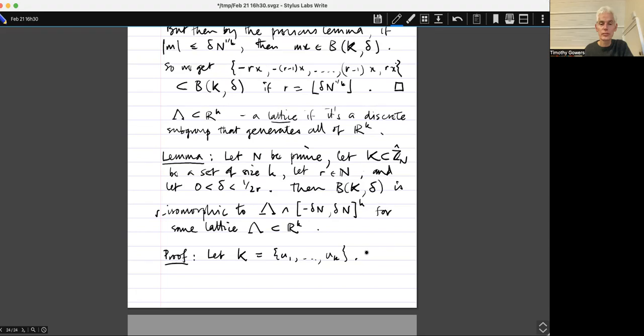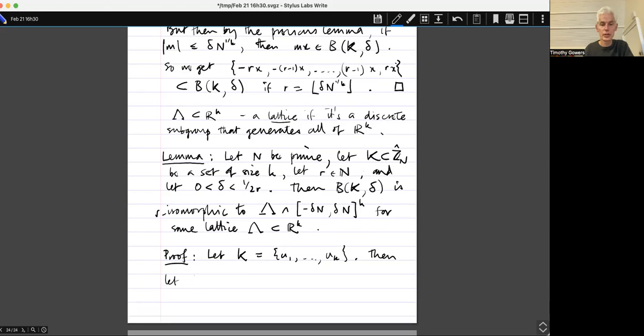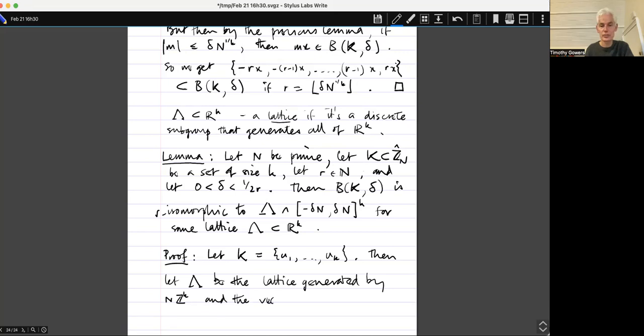Sorry about the duplicate use of i there. And then let Lambda be N times Z to the K. So the set of all points, integer points where all the coordinates are multiples of N. Sorry, I didn't want to say quite that. So almost that. Be the lattice generated by. By the way, I'm assuming, I forgot where I actually wanted to say it, I forgot to say it. I'm assuming that all the characters in K are non-empty because if you've got a, if you've got a non-zero I mean, because you've got zero in here it makes no difference to this set. So it's pointless to include zero.